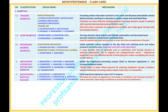Number 3: Angiotensin 2 receptor blockers. Drugs: 1. Azilsartan, 2. Candesartan, 3. Eprosartan, 4. Irbesartan, 5. Losartan, 6. Olmesartan, 7. Telmisartan, 8. Valsartan. Mechanism: these drugs block angiotensin 2 type 1 (AT1) receptors, blocking the actions of angiotensin 2 and resulting in vasodilation and increased excretion of sodium and water. These drugs are effective as monotherapy for hypertension.